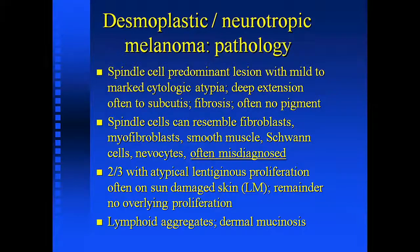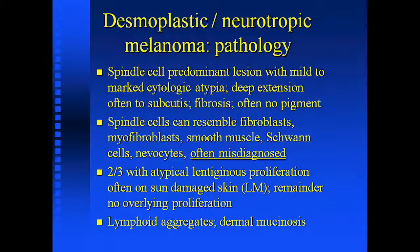There was a pathologist I knew who ordered S100 stains on everything, and I realized the reason he did that was probably because he had missed a desmoplastic melanoma — because S100 is the stain you use. Fortunately, in approximately two-thirds of cases there's something in the epidermis which gives the clue that this is a melanoma, though this varies from a few percent to as high as 80 percent by study. The remainder show no overlying proliferation — a de novo dermal type. The lymphoid aggregates, if you see them, are very characteristic and should be looked for in those cases without atypical hyperplasia.